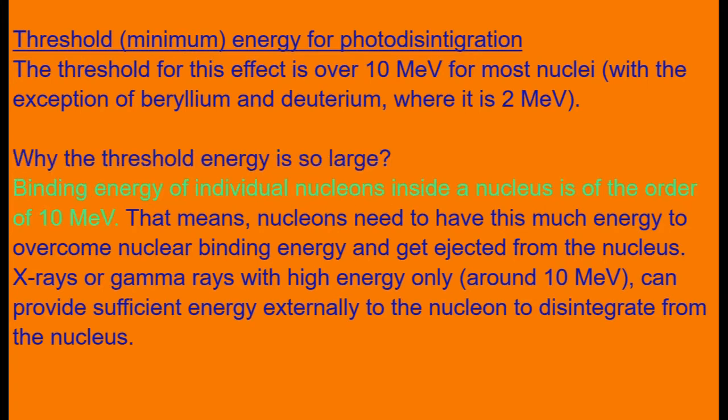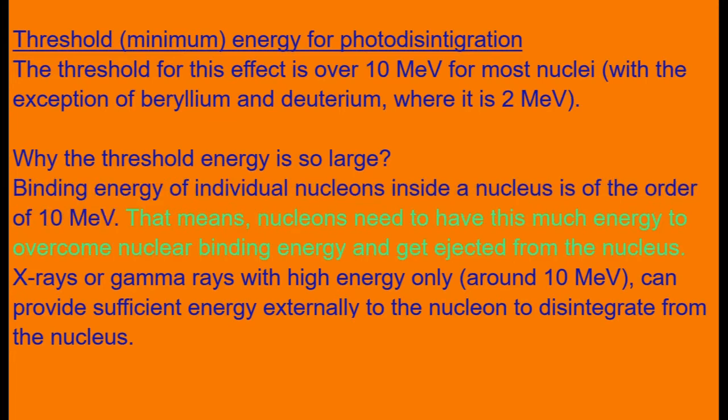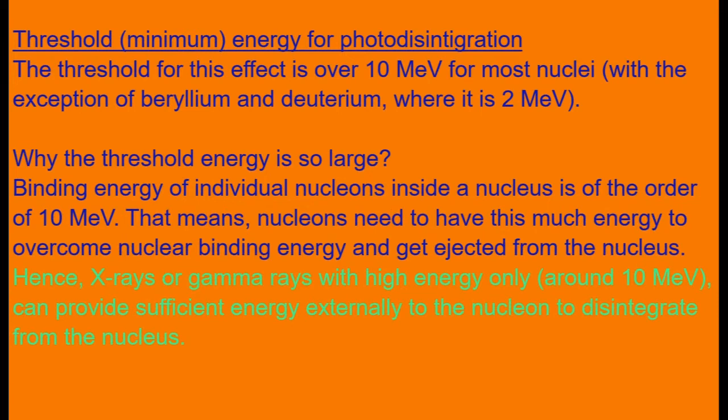Binding energy of individual nucleons inside a nucleus is of the order of 10 MeV. That means a nucleon need to have this much energy to overcome nuclear binding energy and get ejected from the nucleus. Hence, X-rays or gamma rays with high energy only, around 10 MeV, can provide sufficient energy externally to the nucleon to disintegrate from the nucleus.